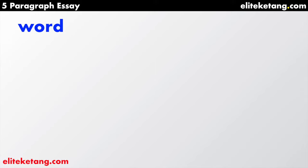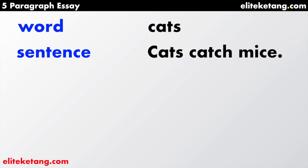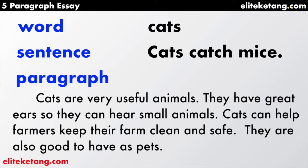To get started — a word. We know what a word is: 'cats.' Bigger than a word is a sentence: 'Cats catch mice.' It's one good thought. But a paragraph is when you take many sentences and put them together. Here are four sentences together — they're all about cats, so we can put them in one paragraph. 'Cats are very useful animals. They have great ears so they can hear small animals. Cats can help farmers keep their farm clean and safe. They are also good to have as pets.' You can see all four sentences are about cats — put them in a group together for a paragraph.